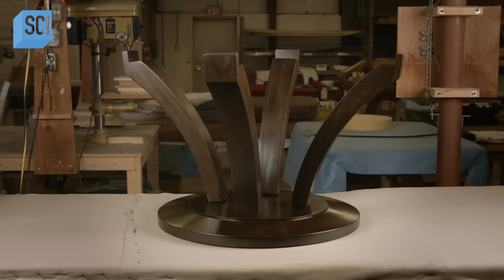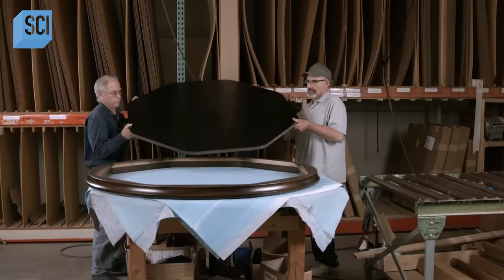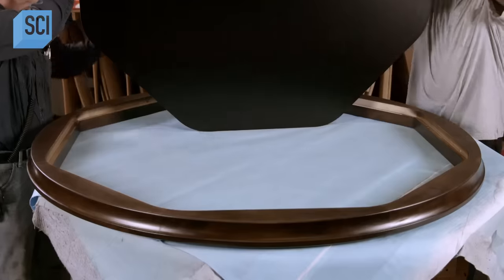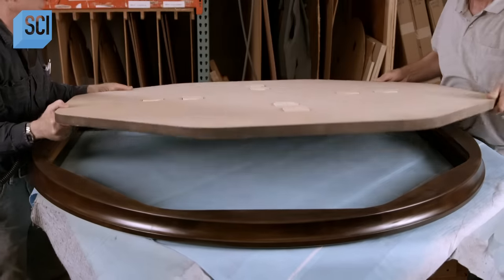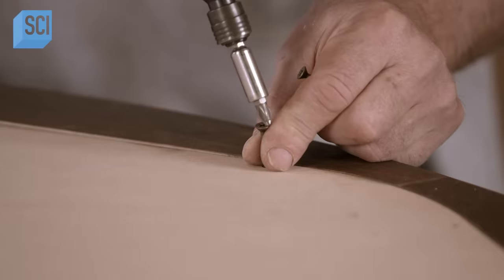Then, workers assemble a pedestal base and install a piece of laminate in a stained maple frame. This creates a storage compartment under the tabletop, as well as providing a foundation for the tabletop to sit on.